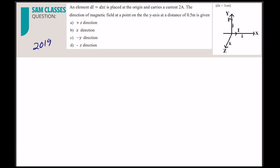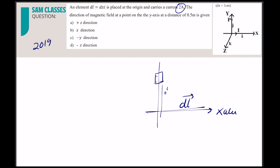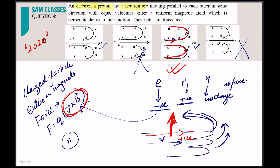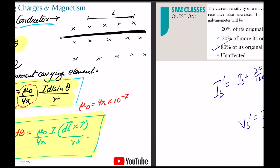2019 question: a current element dl = dx î carries current 2i. We need the direction of the magnetic field at a point on the y-axis, 0.5 m above. The length element is along the x-direction. Using Biot-Savart law, we need dl × r̂.